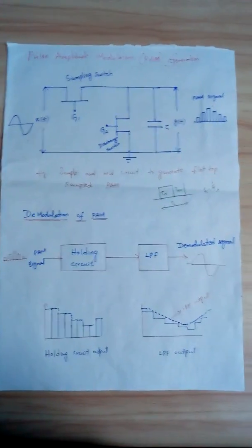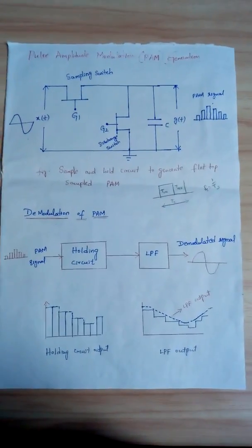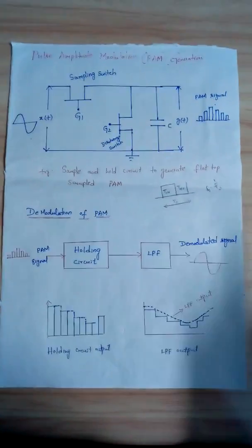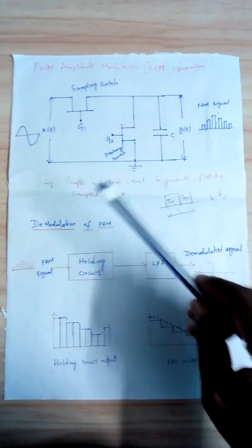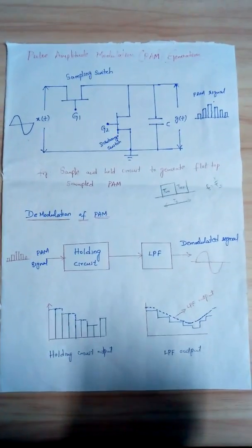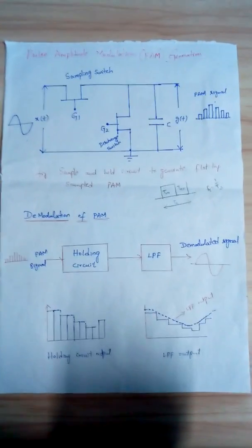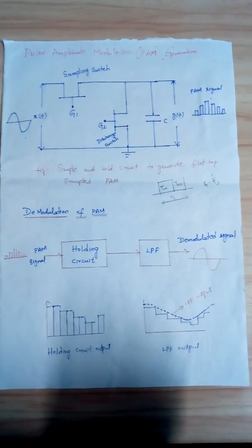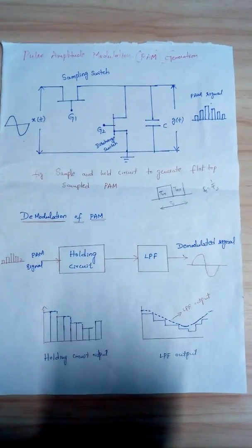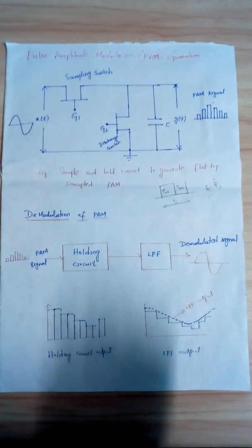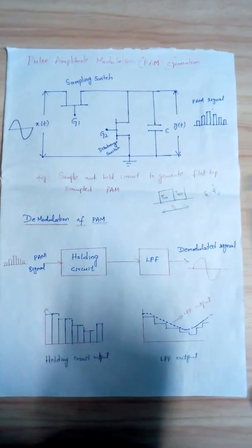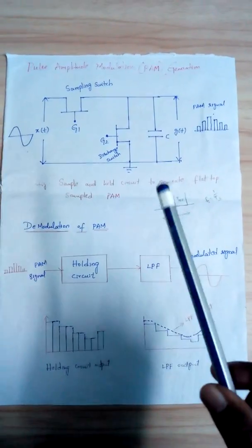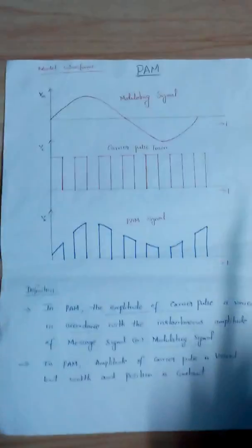Welcome to analog communication. In today's session I am going to explain about pulse amplitude modulation generation, that is PAM generation. In the last session I had discussed the definition of PAM, PWM, and PPM — pulse amplitude modulation, pulse width modulation, and pulse position modulation. Before discussing the generation of PAM, let us first review the definition of PAM from the last session, and look at its diagram.